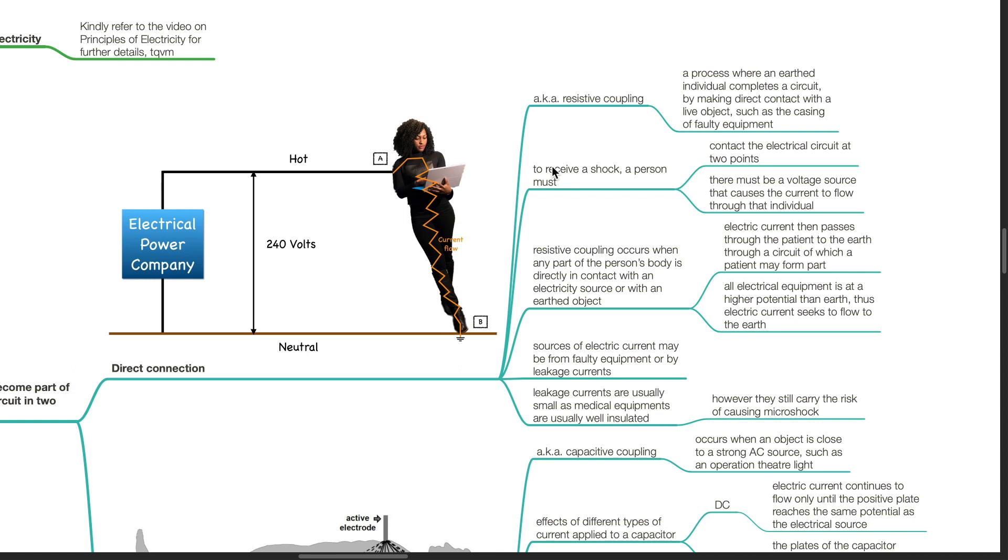All electrical equipment is at a higher potential than earth. Thus, electric current seeks to flow to the earth. Sources of electric current may be from faulty equipment or by leakage currents. Leakage currents are usually small as medical equipment is usually well insulated. However, they still carry the risk of causing microshock.